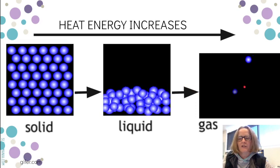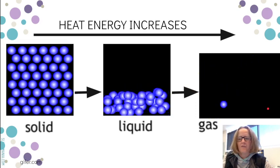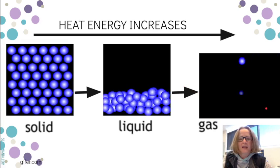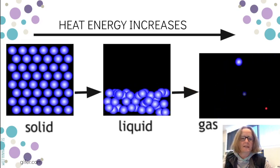And you can see these particles, they would actually be zooming even faster than this image shows. They're zooming, they're very far spaced apart, they have a lot of heat energy in this form as a gas.